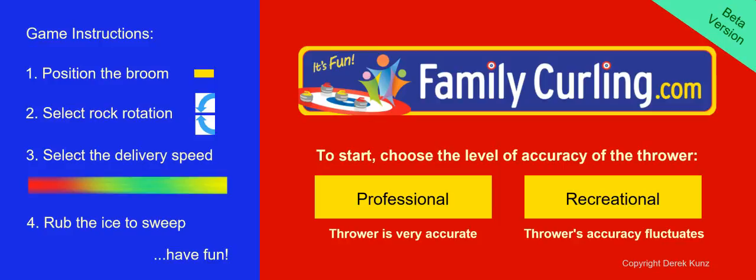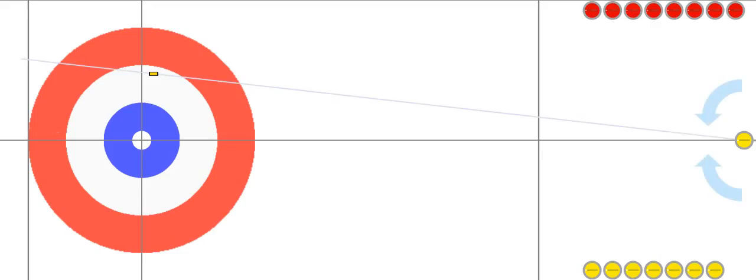To get started we will choose the professional option so that the throws are all very accurate and don't have much human error. At the beginning of a game the two teams will flip a coin. The team that wins the coin toss will almost always choose the last rock — they could choose color and give last rock to the other team, but last rock is so important that if you win the coin toss you choose last rock.